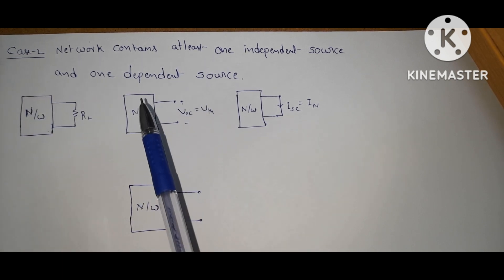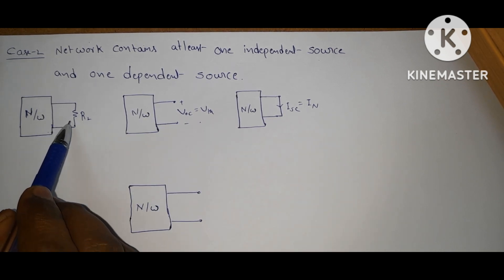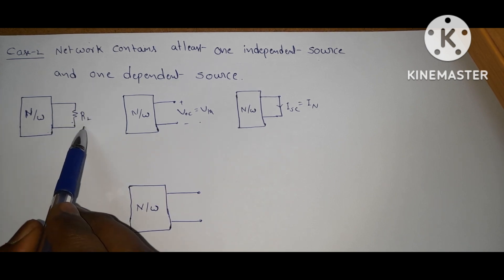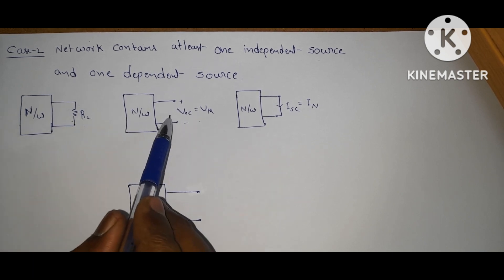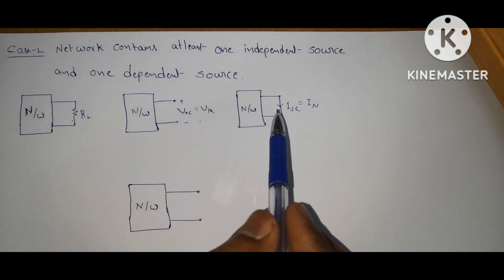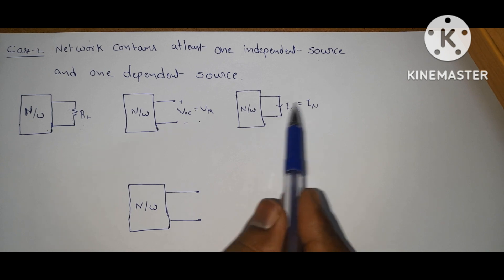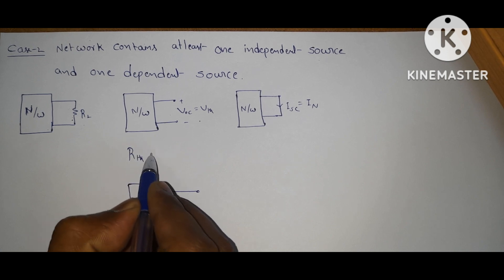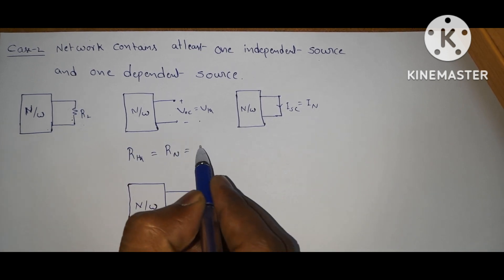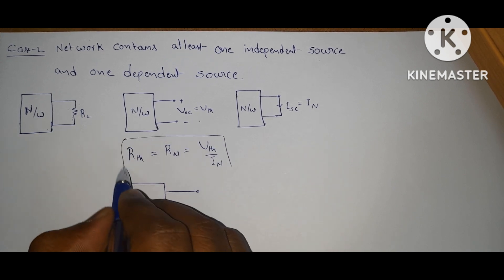In Case 2, how are we finding the Thevenin voltage and Norton current? First, to find Thevenin voltage, replace load resistance RL with open circuit, then find the open circuit voltage. Then replace load resistance with short circuit and find short circuit current — that gives Norton current. R Thevenin equals R Norton equals V Thevenin divided by I Norton.